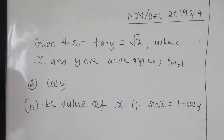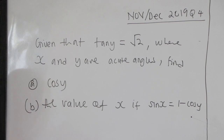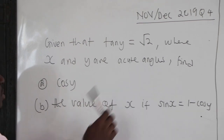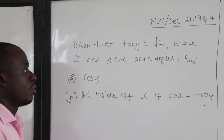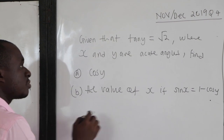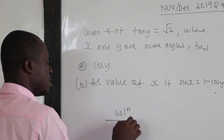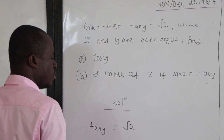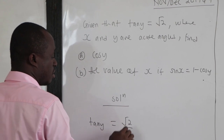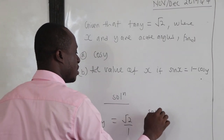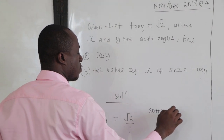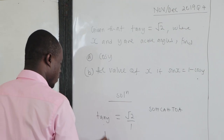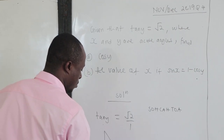This was NOVDEX 2019, question number four. Given that tan y equals root 2, where x and y are acute angles, first find cos y. We have to sketch our right angle triangle. We know tan y equals root 2, which is the same as root 2 over 1. Using TOA — tan is opposite over adjacent — the opposite is root 2 and the adjacent is 1.